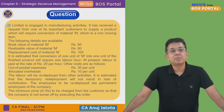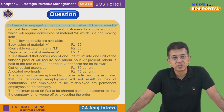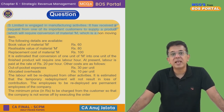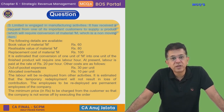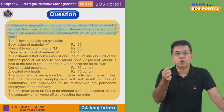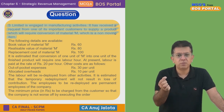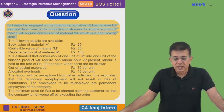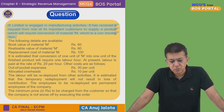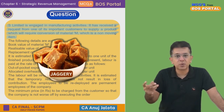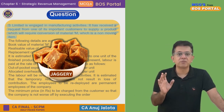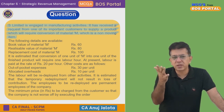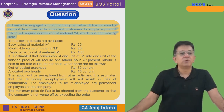S Limited is engaged in manufacturing activities. It has received a request from one of its important customers to supply a product which will require conversion of material M, which is a non-moving item. Non-moving item means that if this order had not come, this material would have been sold because it has no other use — just like if you bought something, kept it, and it turned out to be of no use to you.